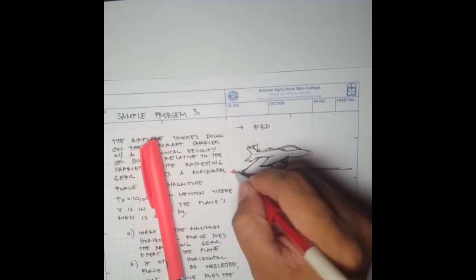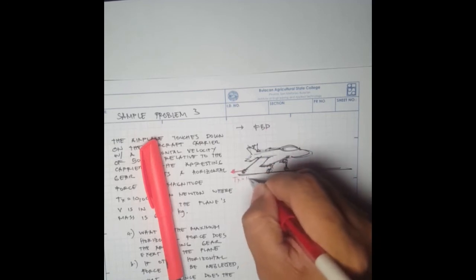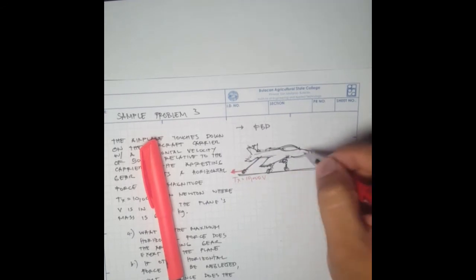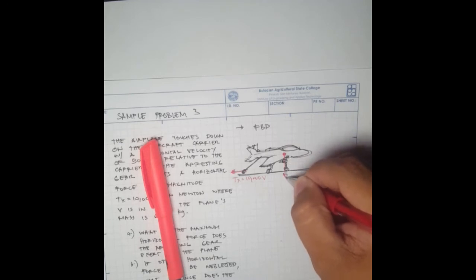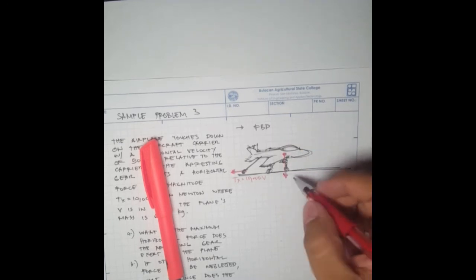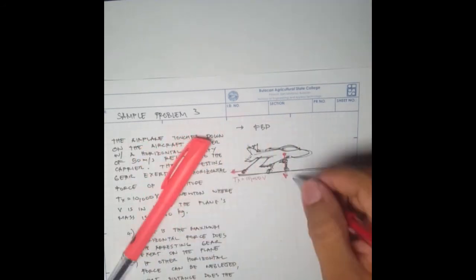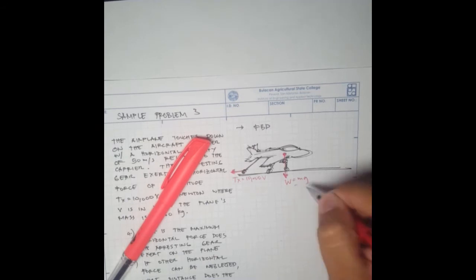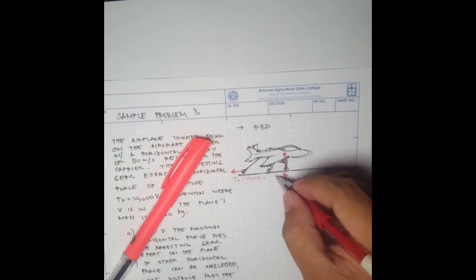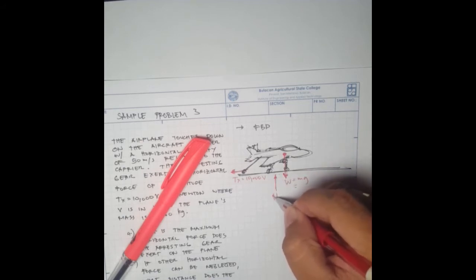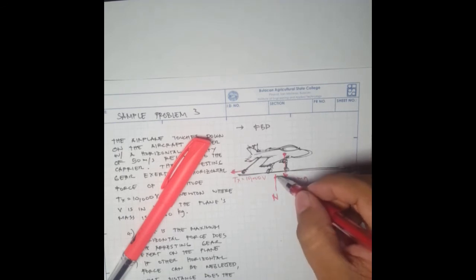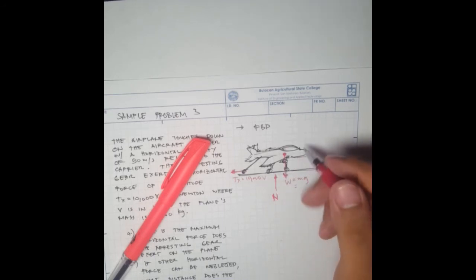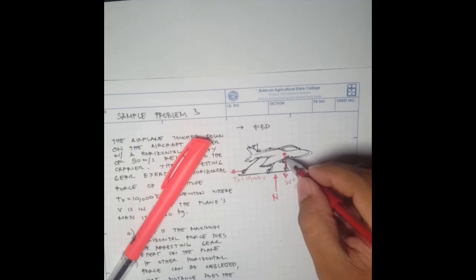Let's draw the free body diagram. We have this force here, Tx equals 10,000v. We have a weight here from the center of gravity. Weight equals mass times gravitational constant. We also have the normal force acting upward. This is just a representation of the total normal force from the wheels.